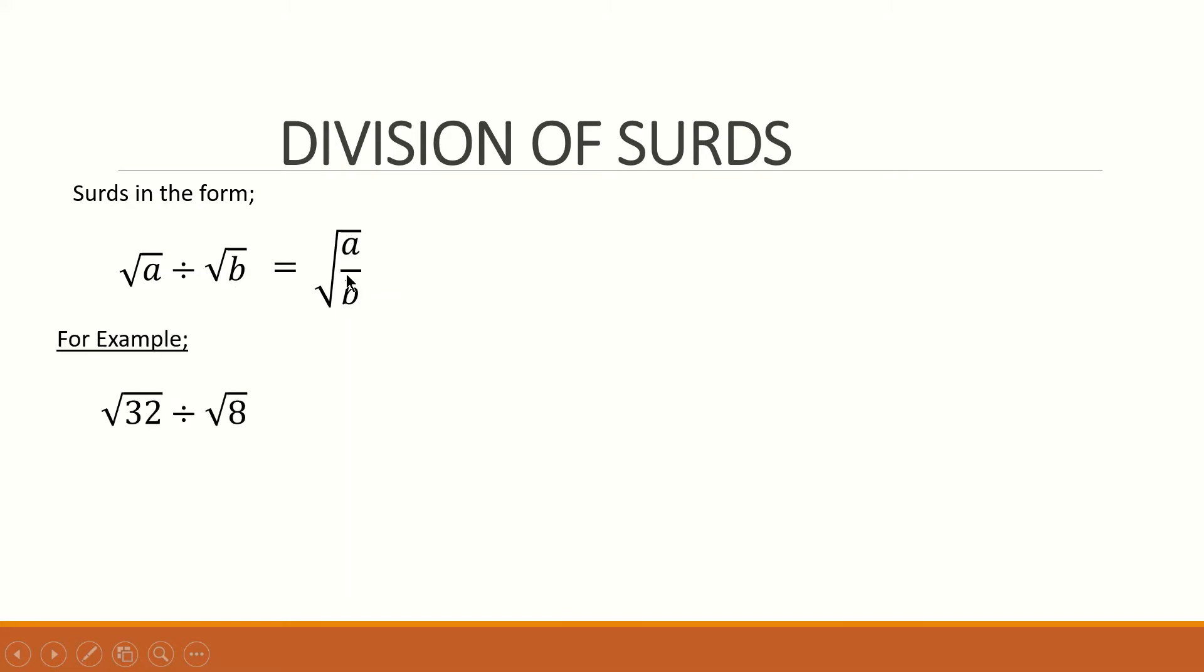For example, if I have root 32 divided by root 8, what I do is divide 32 by 8 and take the square root. So 32 divided by 8 gives us root 4.